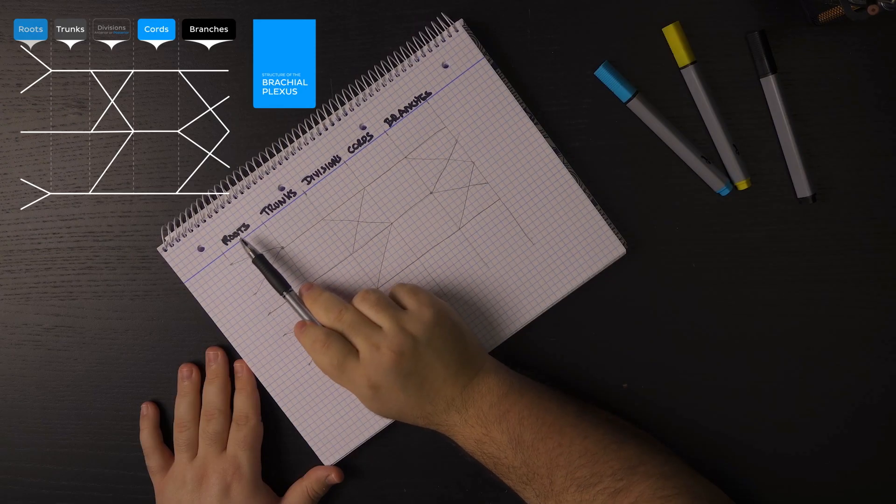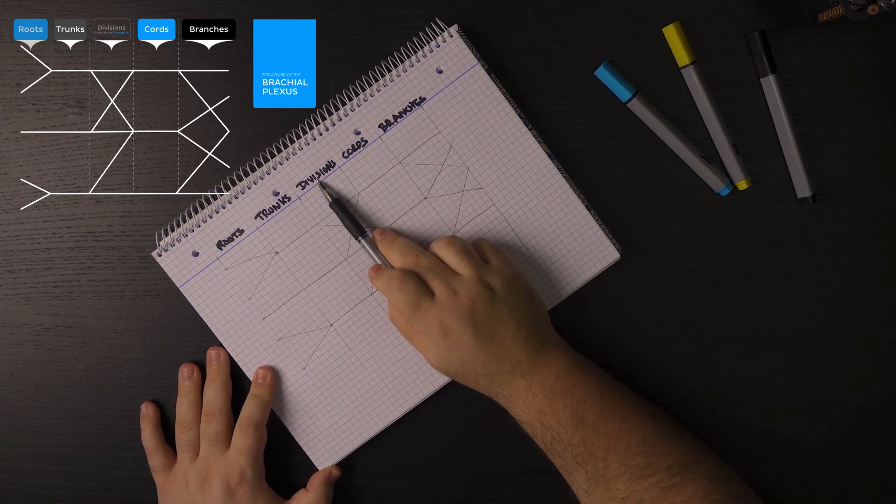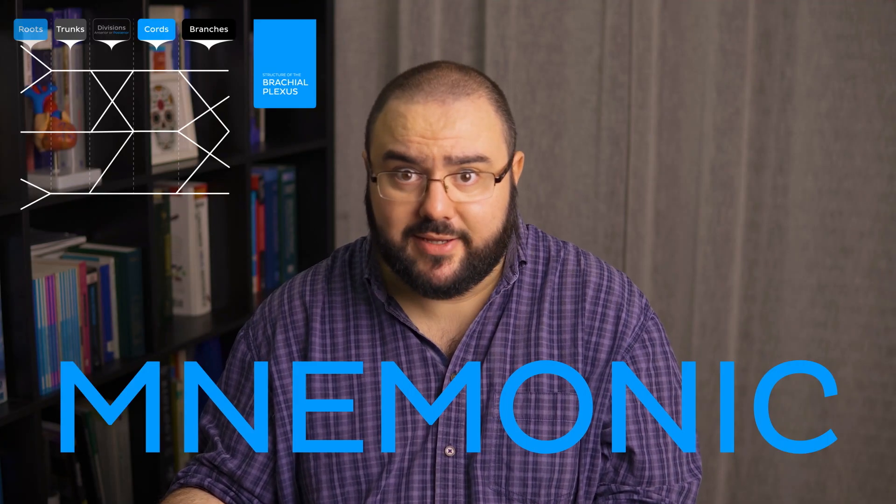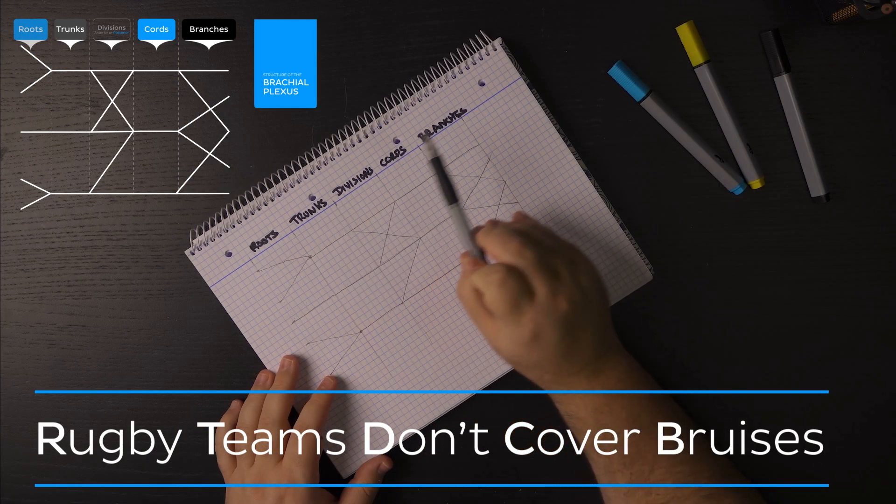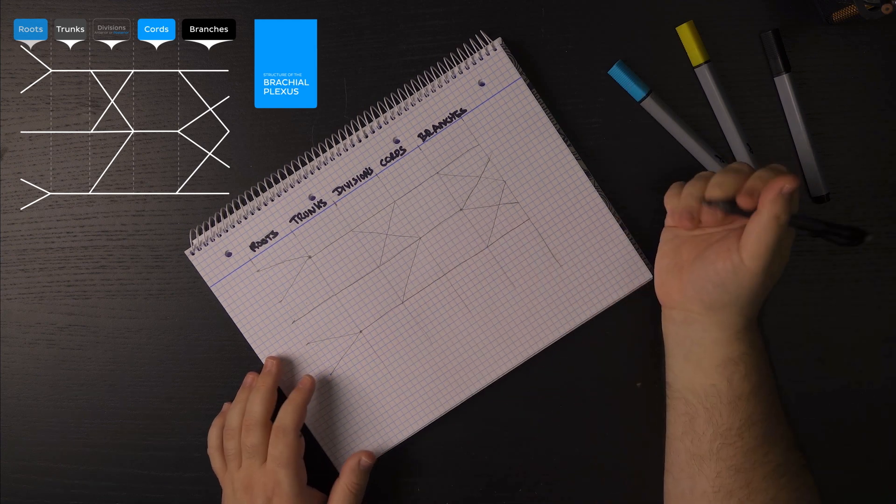Oh, one thing, one quick trick to remember how to write then the order of the roots, trunks, divisions, cords, and branches. What you can do is use a mnemonic. Yes, mnemonics are a great way to remember these structures easily. And you can do rugby teams don't cover bruises for roots, trunks, divisions, cords, and branches, respectively.